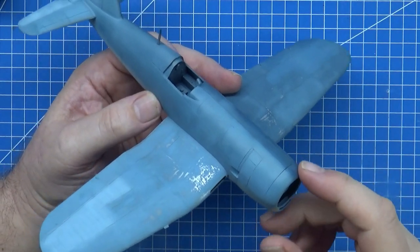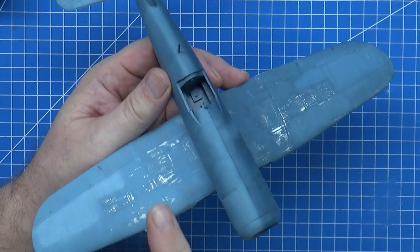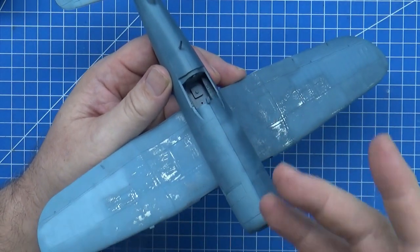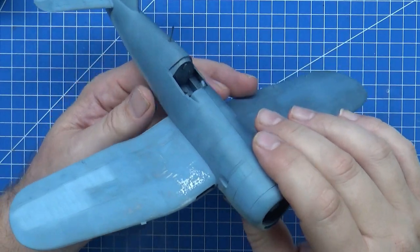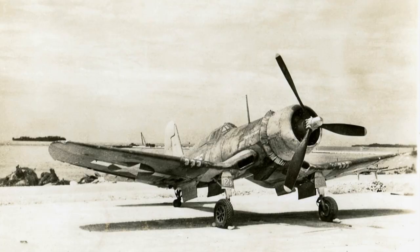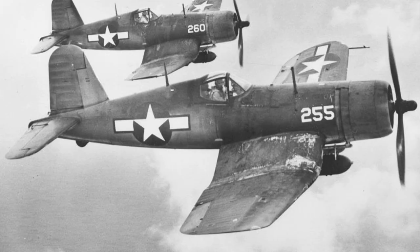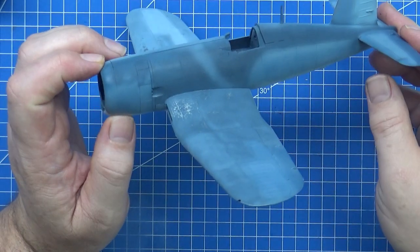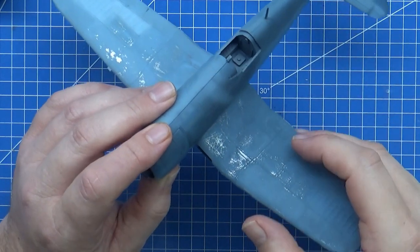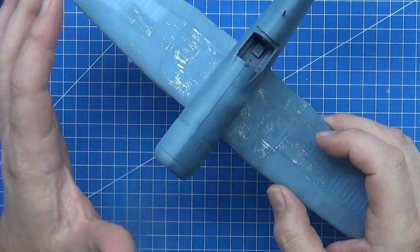I've decided for my double Corsair build, the Tamiya kits, that I want to do basically a generic or stereotypical kit, not a specific aircraft. I want to do this because I want to practice elements of all of the weathering and painting techniques across the Corsairs. They're extremely faded and used in the South Pacific, so that means we need to talk about historical paint.